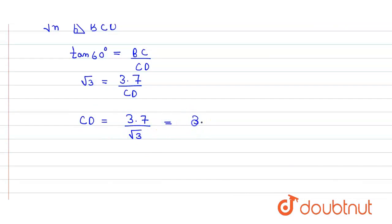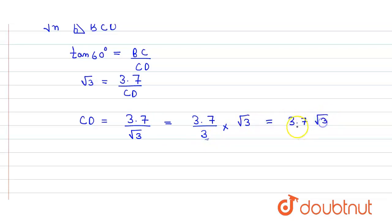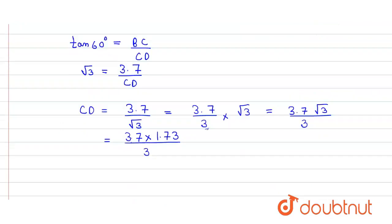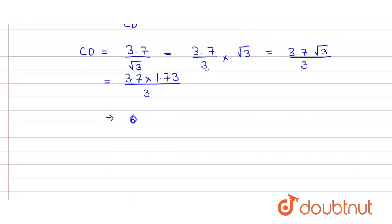CD equals 3.7 divided by root 3. When we rationalize it, we multiply numerator and denominator by root 3, giving 3.7 root 3 divided by 3. Using the value root 3 = 1.73, we get 3.7 times 1.73 divided by 3, which equals 6.401 divided by 3, giving approximately 2.13.